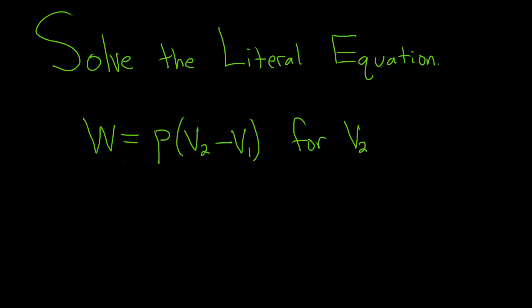Solve the literal equation. We have w equals p times v2 minus v1, and we're trying to solve for v2. Let's go ahead and work through it.